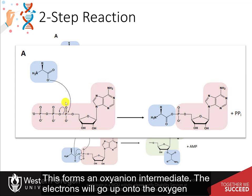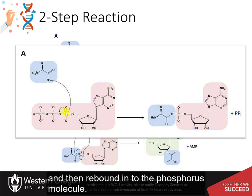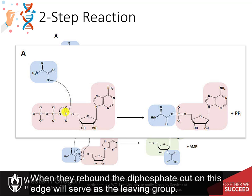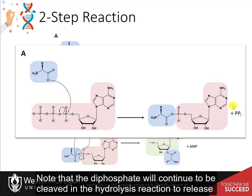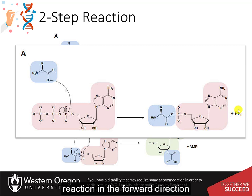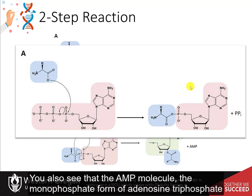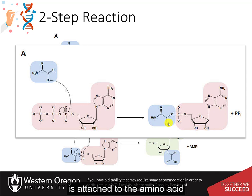The electrons will go up onto the oxygen and then rebound into the phosphorus molecule. When they rebound, the diphosphate on this edge will serve as the leaving group. Note that the diphosphate will continue to be cleaved in a hydrolysis reaction to release two inorganic phosphate molecules. When this happens, it will release a lot of energy, and this energy is used to drive this reaction in the forward direction. The AMP molecule — the monophosphate form of adenosine triphosphate — is attached to the amino acid. This is called an aminoacyl adenylate.